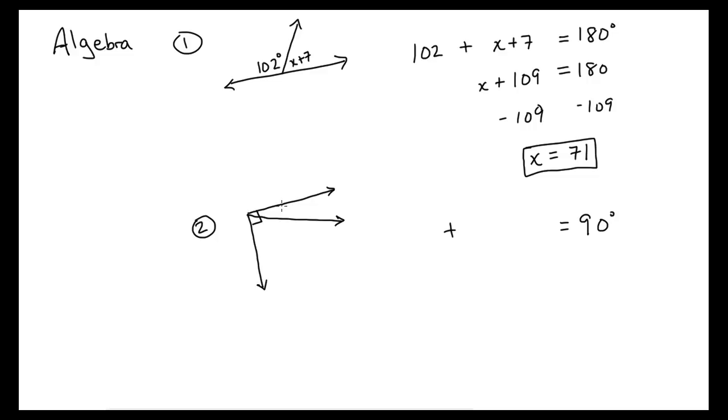So let's say that this is x minus 5 and this is 3x plus 1. So we take them and say x minus 5 plus the other one, 3x plus 1, is equal to 90.